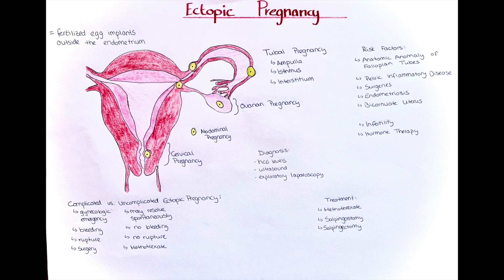Indications for methotrexate include having an uncomplicated ectopic pregnancy, hemodynamic stability, no rupture of the mass, and beta-HCG levels below 2,000 mUnits per milliliter. Surgical options are salpingostomy — opening the fallopian tube and removing products of conception — or salpingectomy, which is removal of the affected fallopian tube.